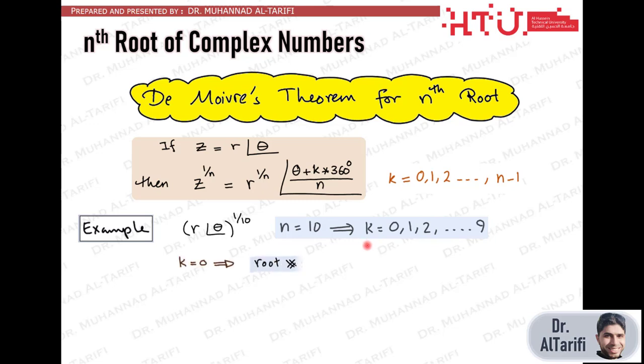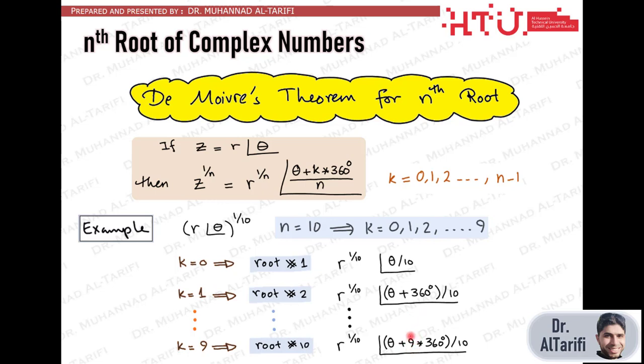If k equals 0 then the phase is theta divided by n or theta divided by 10 because n equals 10. If k equals 1 then the phase is theta plus 360 degrees all divided by 10. And if k equals 9 then the phase is theta plus 9 times 360 degrees all divided by 10. Note here that regardless of the k value the root magnitude is r to the power 1 over n.